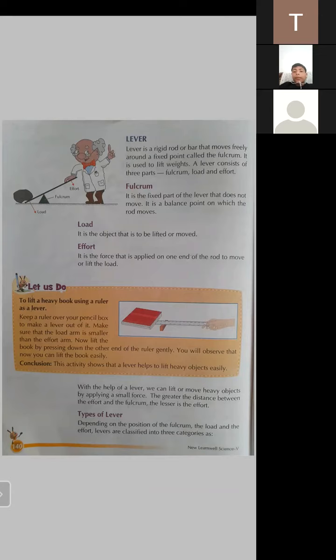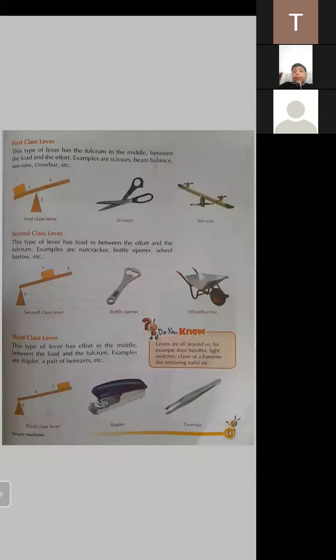This activity shows that a lever helps to lift heavy objects easily. Since a lever makes our task easy, this means a lever is a simple machine. With the help of a lever we can lift or move heavy objects by applying small force. There are three types of levers: first class lever, second class lever, and third class lever.